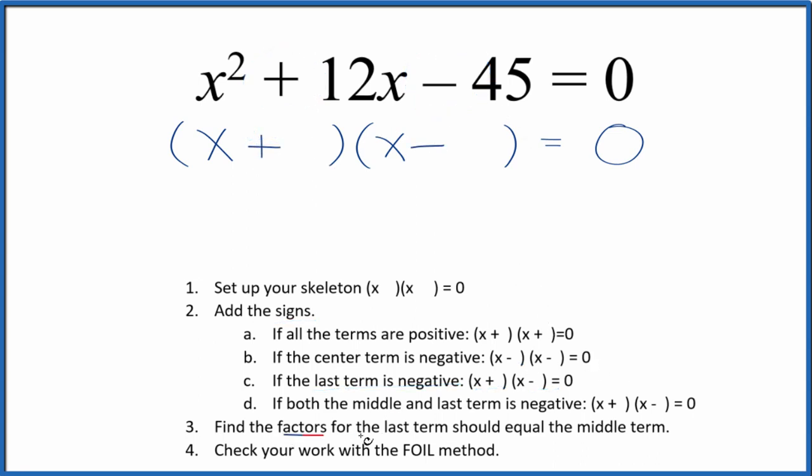Next, we want to find the factors for the last term. That's the negative 45 there, and they should add up to the middle term. So these are the factors for 45. I can see 3 times 15. That'll give me the 45. And the difference between 3 and 15, that's going to be 12.